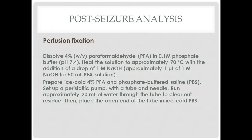Post-seizure analysis. We have three main steps. The first is perfusion fixation. We'll dissolve 4% weight by volume PFA in 0.1 molar phosphate buffer at pH 7.4. We'll heat the solution to approximately 70 degrees centigrade with the addition of a drop of 1 molar NaOH. We'll prepare ice-cold 4% PFA and phosphate buffered saline. Set up a peristaltic pump with a tube and needle, run approximately 20 mL of water through the tube to clear out residue, then place the open end of the tube in ice-cold PBS.